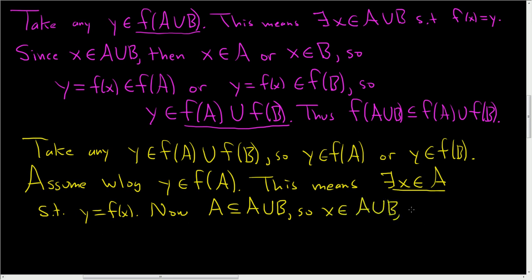Well, if X is in A union B, this means that Y, which is equal to F of X, is in the direct image of A union B under F. Now, if Y is in F of B, the argument is exactly the same. That's why I said without loss of generality, just so I wouldn't have to write the same thing twice.